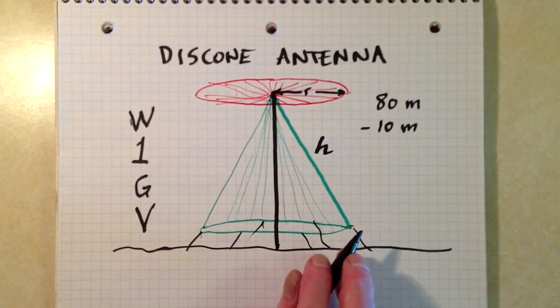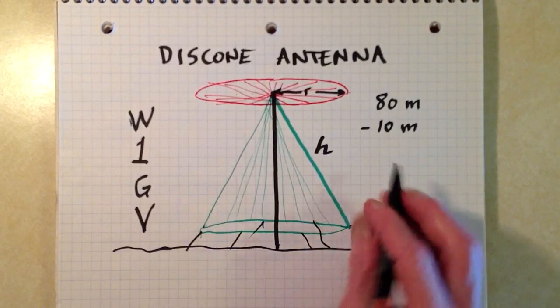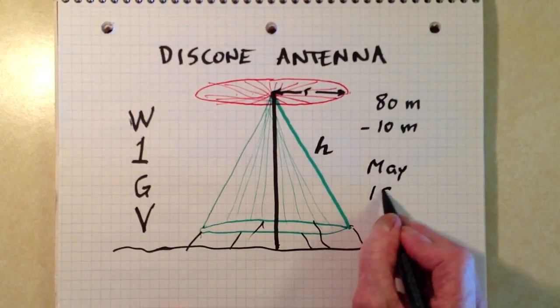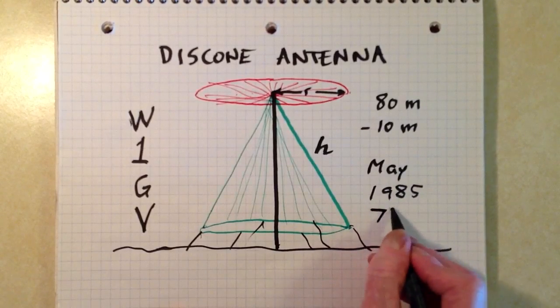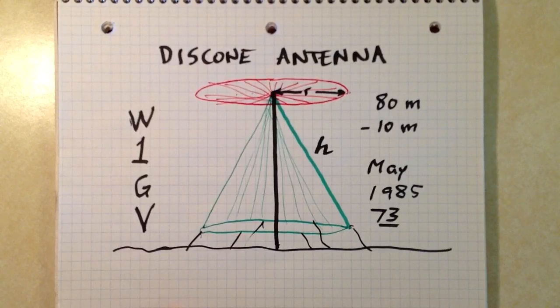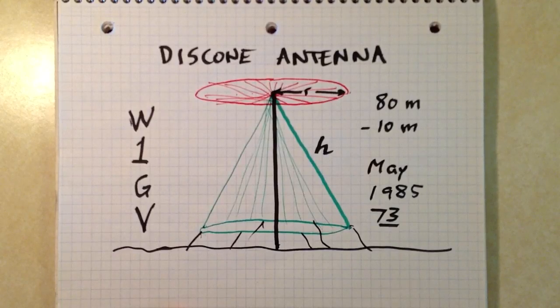As a matter of fact, I wrote an article in the May 1985 issue of 73 Magazine. Do you remember that old magazine? Wayne Green and Company published this article by me on the disc cone antenna, offering a lot of construction details, and I will provide a link to an archive of that article at the description of this video.